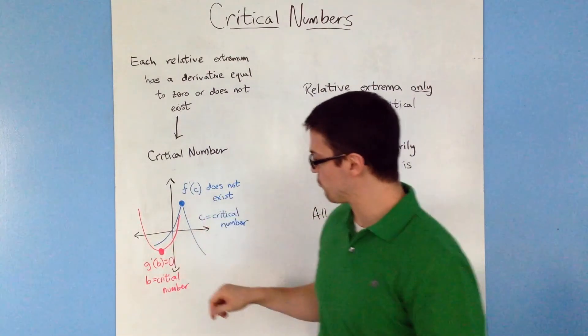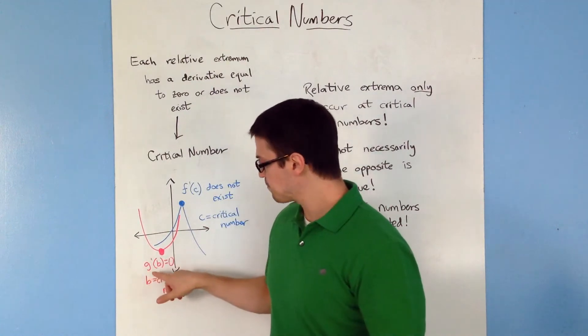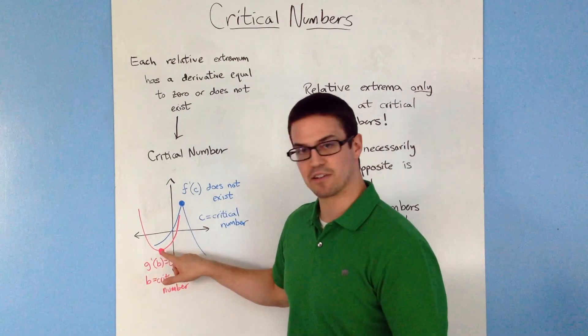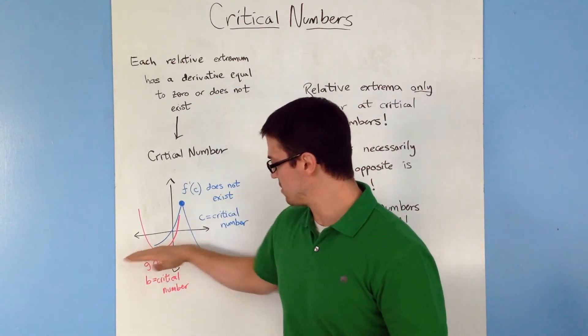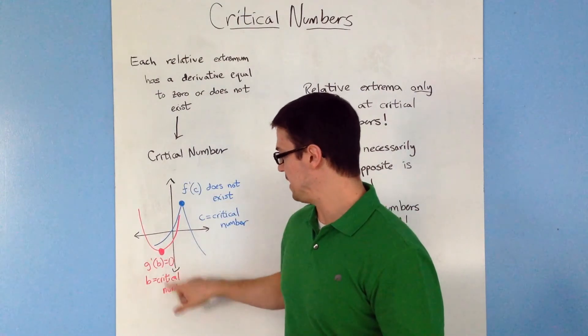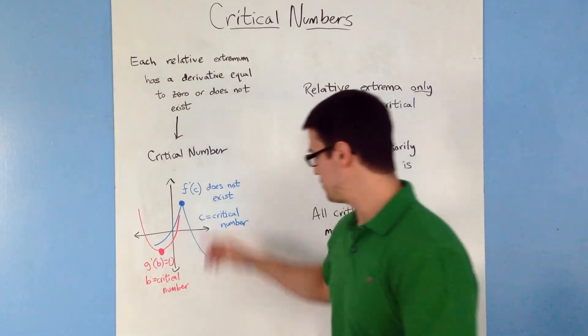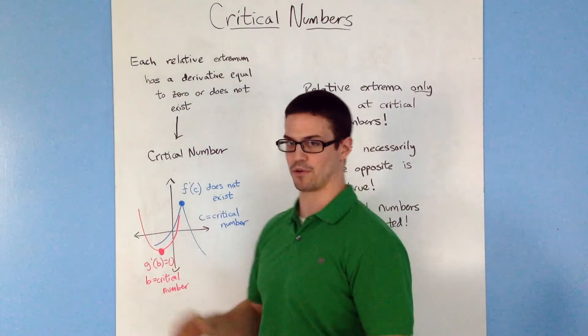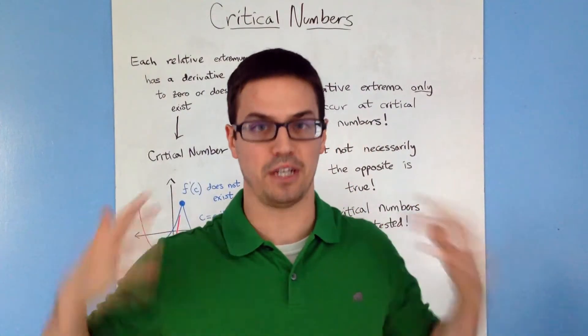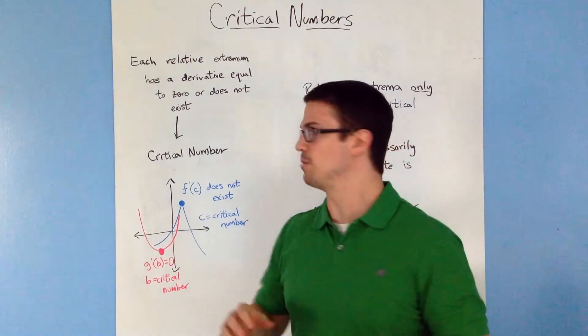Okay. Another one, I have a parabola right here in red, function g. Now g prime of b right here is going to be equal to zero because it's a horizontal tangent line. And that b represents the critical number. So these are the two examples: the derivative does not exist or the derivative is equal to zero. That is critical numbers.